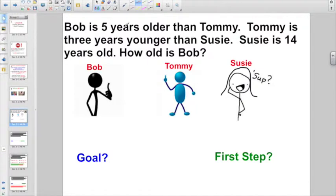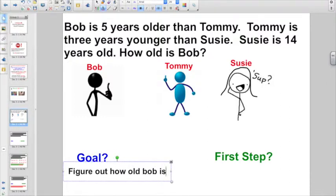And it says, Bob is five years older than Tommy. Tommy is three years younger than Susie. And it tells you Susie is 14 years old. And they want to know how old is Bob. Maybe you want to go ahead and draw yourself three little stick people. And maybe just write down the characters just to help you keep everything straight. And let's think about what the goal is on this problem. The goal is trying to figure out how old Bob is, right?